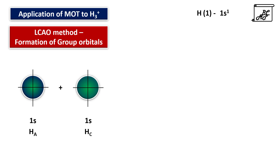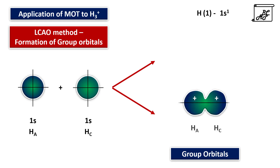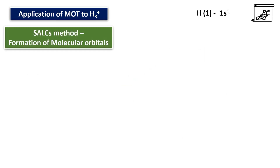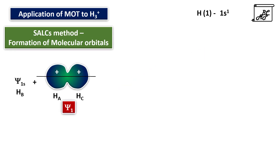HA and HC will combine with each other — two are combining, so two will be formed: one will be a bonding molecular orbital termed as psi 1, and the other will be an anti-bonding molecular orbital termed as psi 2. Psi 1 and psi 2 are called group orbitals. According to the symmetry adapted linear combinations method, these group orbitals will now combine with the atomic orbital of the central atom, and the central atomic orbital can combine with psi 1 group orbital.